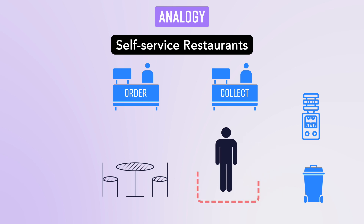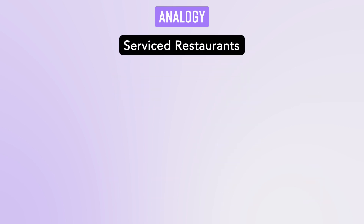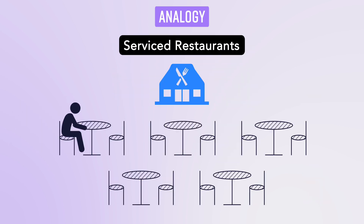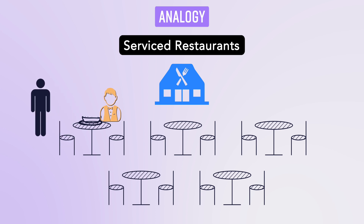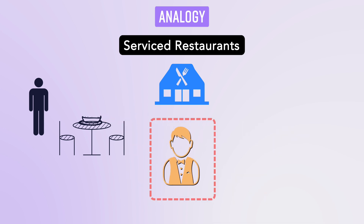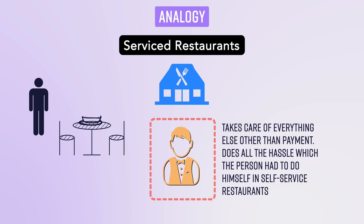Here, most of the operations are done by you. You have to go to three or four separate counters to fulfill your goal of having a meal. In a service restaurant, you just sit at a table and place your order. Your food, water, and everything else is served at your table. You eat, pay, and leave. The waiter takes your order to the kitchen, the kitchen prepares your meal, handles scheduling, plating, and carries it to your table. The waiter acts as a facade to all the kitchen operations happening in the background.